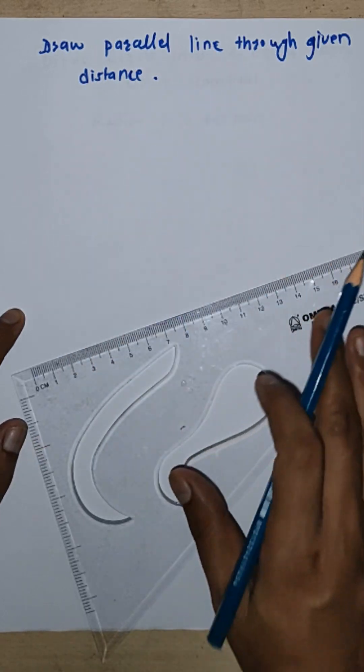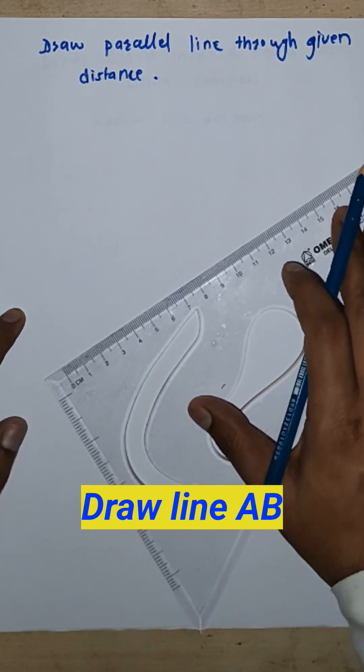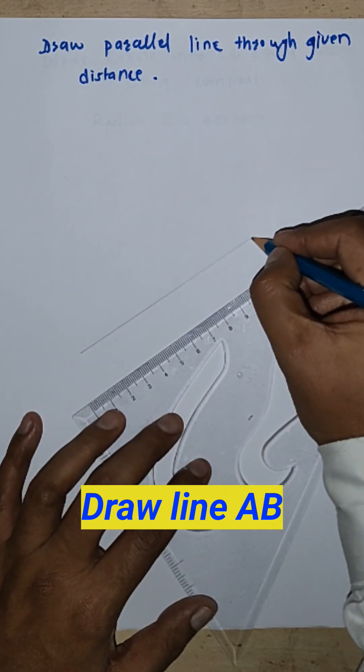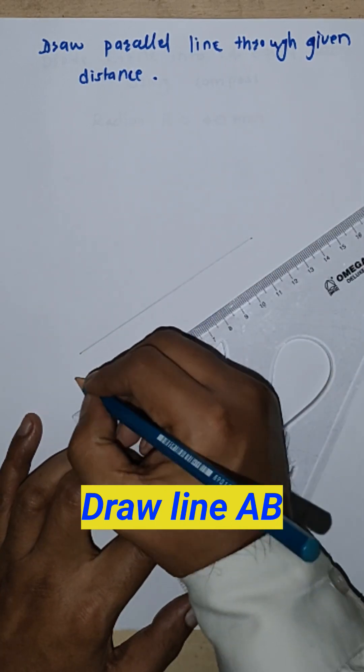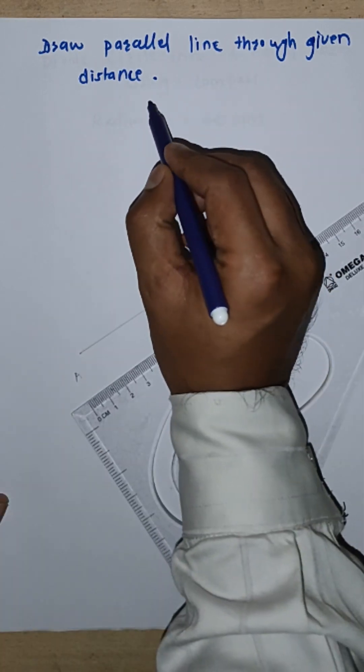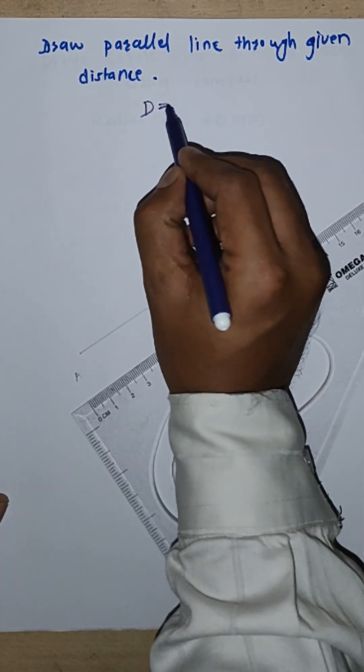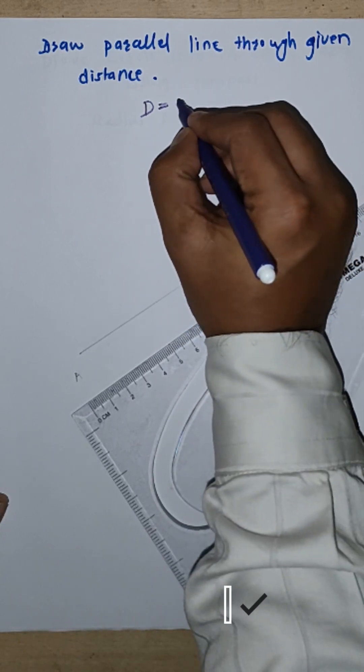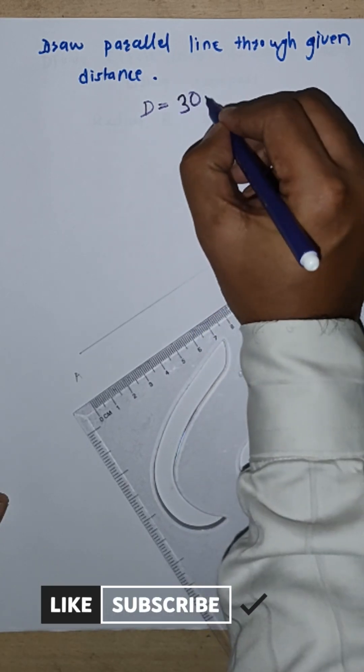Draw a parallel line through given distance. First, draw a line AB. The distance given is, suppose, 30 mm.